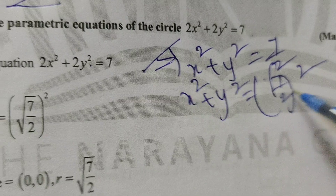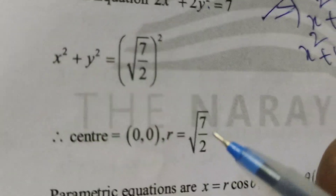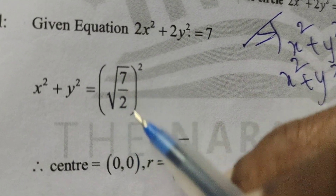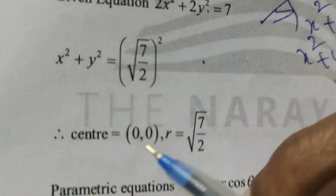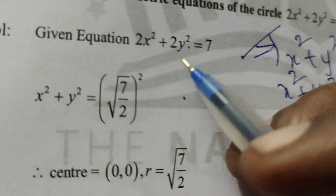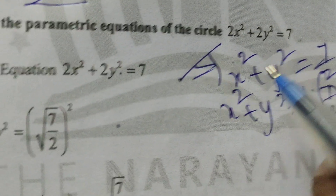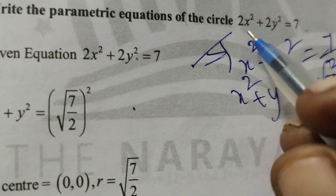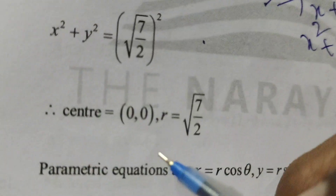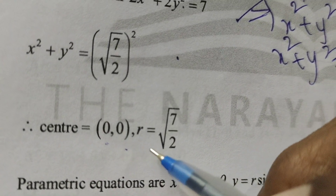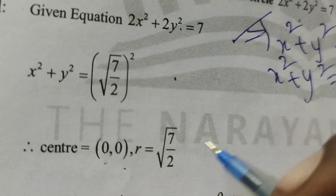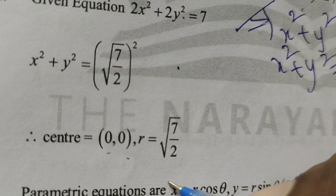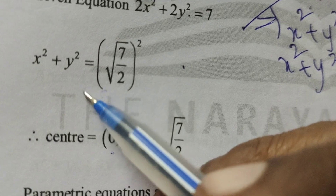After cancellation, square and root will give 7 by 2. So we arrange this as root of 7 by 2, whole square. The center: in this given equation there is no center — meaning there are no g and f values — so the center is (0, 0). The radius r equals root of 7 by 2.